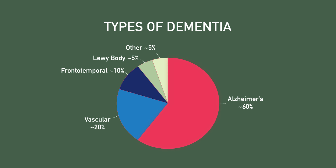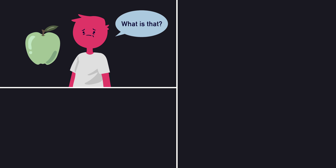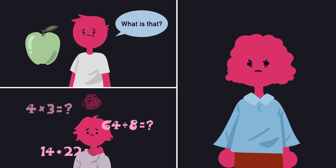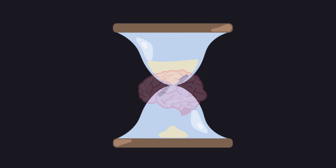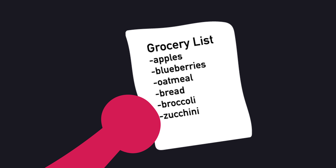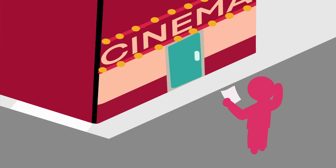Alzheimer's disease is one of the most common forms of dementia, a chronic disorder of mental processes caused by brain disease or injury, and marked by memory disorders, personality changes, and impaired reasoning. Alzheimer's disease is a progressive neurodegenerative disease that leads to memory loss and cognitive decline, often preventing the affected individual from carrying out simple day-to-day tasks.